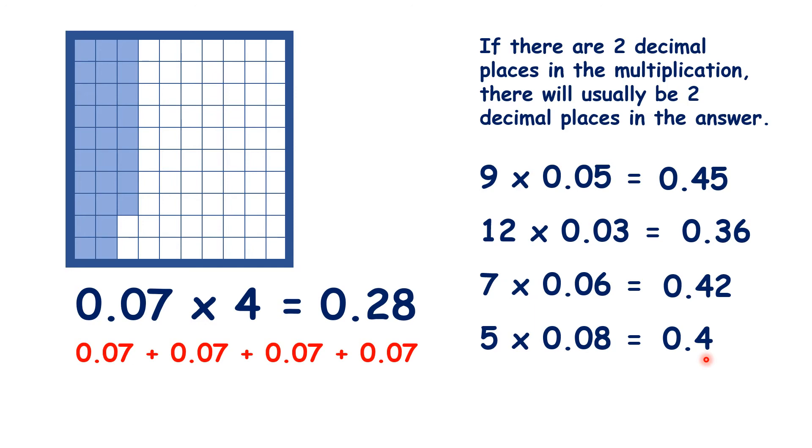So while there are usually two decimal places in the answer, we can still get a number with one decimal place as our answer when we multiply by a hundredth. But that only happens when if we were multiplying by whole numbers, we'd have a 0 on the end, like we do with 40.